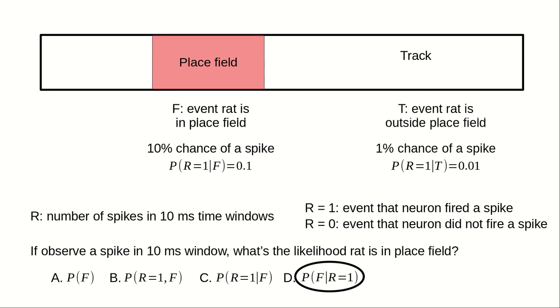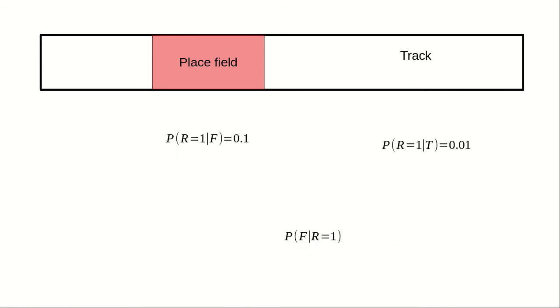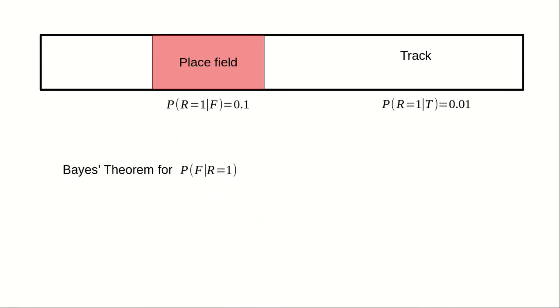It looks like we can use Bayes' theorem to write down an expression for P of F given R equals 1 involving some of the observed probabilities. Pause the video to write down Bayes' theorem and see if you get the answer that I do. Bayes' theorem for our desired conditional probability is P of F given R equals 1 equals P of R equals 1 given F times P of F divided by P of R equals 1.